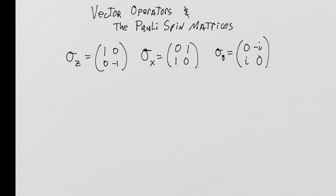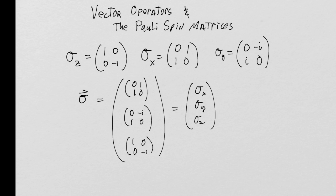We're also going to discover what a vector operator is in this process. One of the vector operators we are going to discover is the Pauli spin vector operator, where we now look at the Pauli matrices as the components of a vector — literally a vector with each component being a matrix.